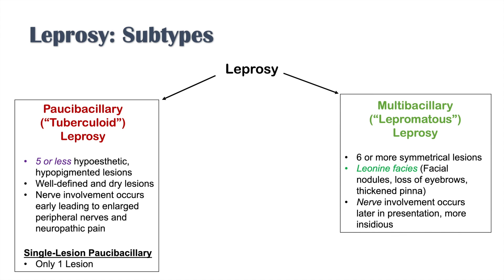Another subtype is multibacillary, or lepromatous leprosy, with six or more symmetrical lesions and what we describe as leonine facies — facial nodules, loss of eyebrows, and thickened pinna. Nerve involvement in multibacillary leprosy occurs later with a more insidious onset.